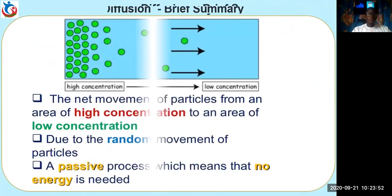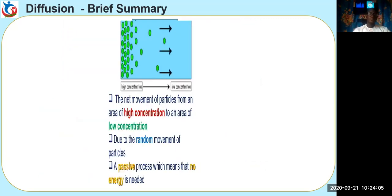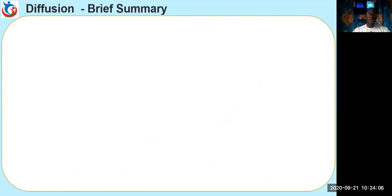Welcome to Biologic Quiz here on IQ Checker YouTube channel, titled Diffusion, one of the passive movements of molecules in and out of cells. Displayed on the screen is a brief summary on diffusion and factors affecting the rate of diffusion.